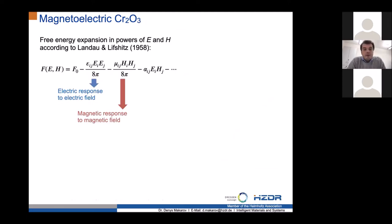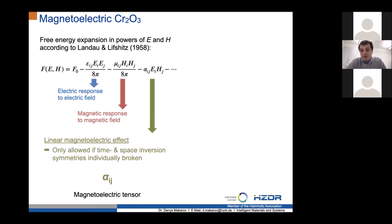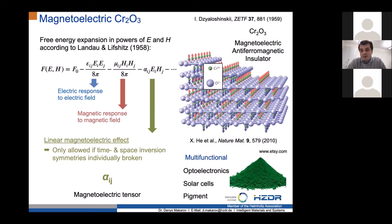I will now talk about chromium oxide. For a magneto-electric effect to be allowed in a material, you need a bi-linear coupling term coupling electric fields and magnetic fields with a magneto-electric tensor. This puts strong requirements on material properties: you need time reversal and space inversion symmetries individually broken. One material that satisfies this is chromium oxide, first predicted by Igor Dzaloshinskii in 1959 — still, to my knowledge, the only linear and collinear antiferromagnetic insulator with magneto-electric effect at room temperature.